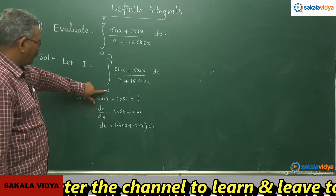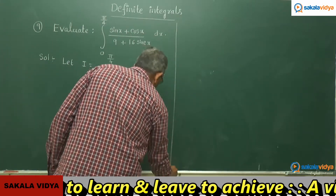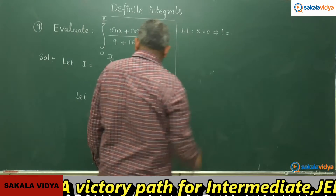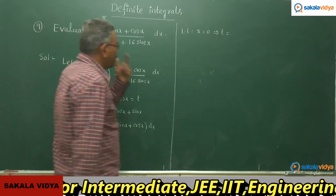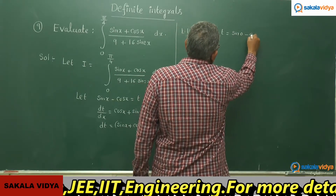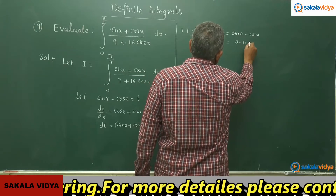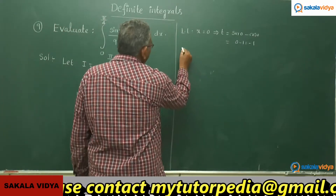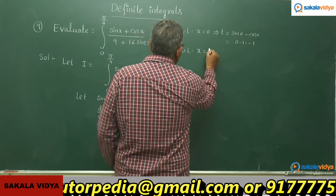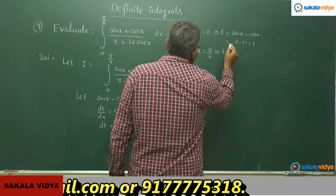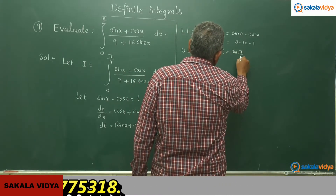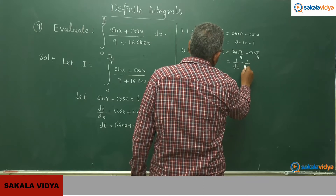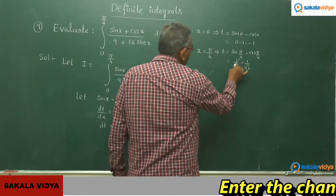Now let us change the lower and upper limits. When x = 0: t = sin 0 minus cos 0 = 0 minus 1 = minus 1. So the lower limit changes to minus 1. For the upper limit, when x = pi/4: t = sin(pi/4) minus cos(pi/4) = 1/√2 minus 1/√2 = 0. The upper limit becomes 0.